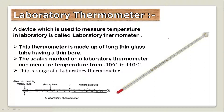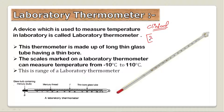In comparison, the clinical thermometer had a temperature range of 35 degrees Celsius to 42 degrees Celsius, which covers the normal human body temperature range.